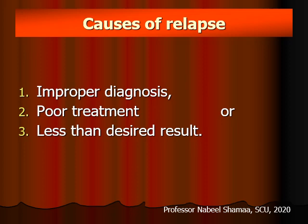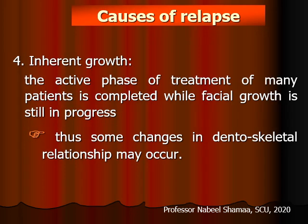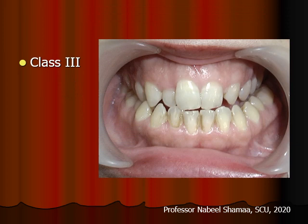Causes of relapse could be improper diagnosis, poor treatment, or less than desired results. Another cause is inherent growth: the active phase of treatment of many patients is completed while facial growth is still in progress. You may see the patient at age 10, 11, or 12, finish treatment within one or two years, and still growth continues. Some changes in the dental-skeletal relationship may occur; for example, in Class III cases after finishing treatment, the mandible continues to grow.